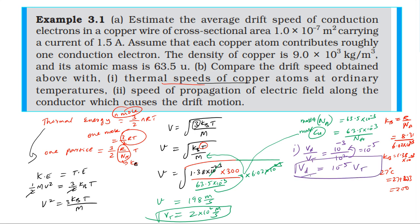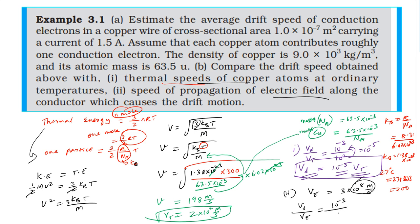Drift speed of electron is 10⁻⁵ times the thermal speed of copper atoms. For the second comparison, the speed of electric field is comparable to the speed of light, approximately 3 × 10⁸ meter per second. Drift speed is in the order of 10⁻³ and electric field speed is 10⁸, so drift speed is 10⁻¹¹ times the speed of electric field propagation.